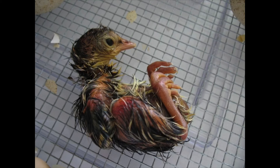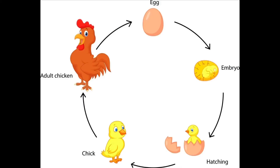Chicks know instinctively how to scratch around in the dirt for food — that means they know how to do it without being taught. For the first two weeks, the chicks stay close to their mother. Chicks grow quickly in the first months of their lives. When a female is about six months old, she will start to lay eggs, though these first eggs will be quite small. Interestingly, females are called pullets, not hens, until they are one year old. Roosters are able to fertilize eggs at a similar age. And so the life cycle begins all over again.